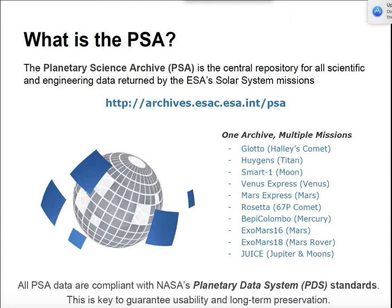This is the URL for the website. We archive all the data from all the planetary science missions, starting from Giotto, Ulysses, Smart-1 mission for the Moon, Venus Express, Mars Express, and Rosetta. In the future: BepiColombo, ExoMars 2016, 2018 — the rover mission — and JUICE.